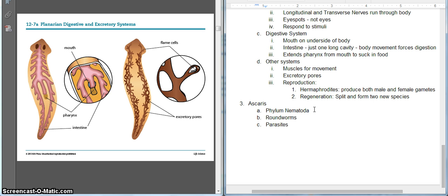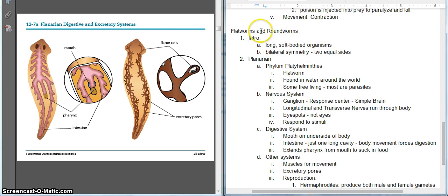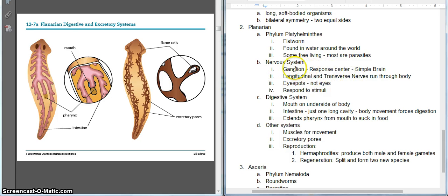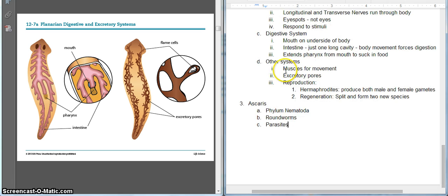Let's make sure that we understand what we've been talking about, the flatworms and roundworms. The flatworms, primarily planarians, all of these are going to exhibit bilateral symmetry. The planarian does have a nervous system. It uses a ganglion kind of as its control center or response center. The Ascaris is a roundworm, and it is a parasite. Enjoy your evening.